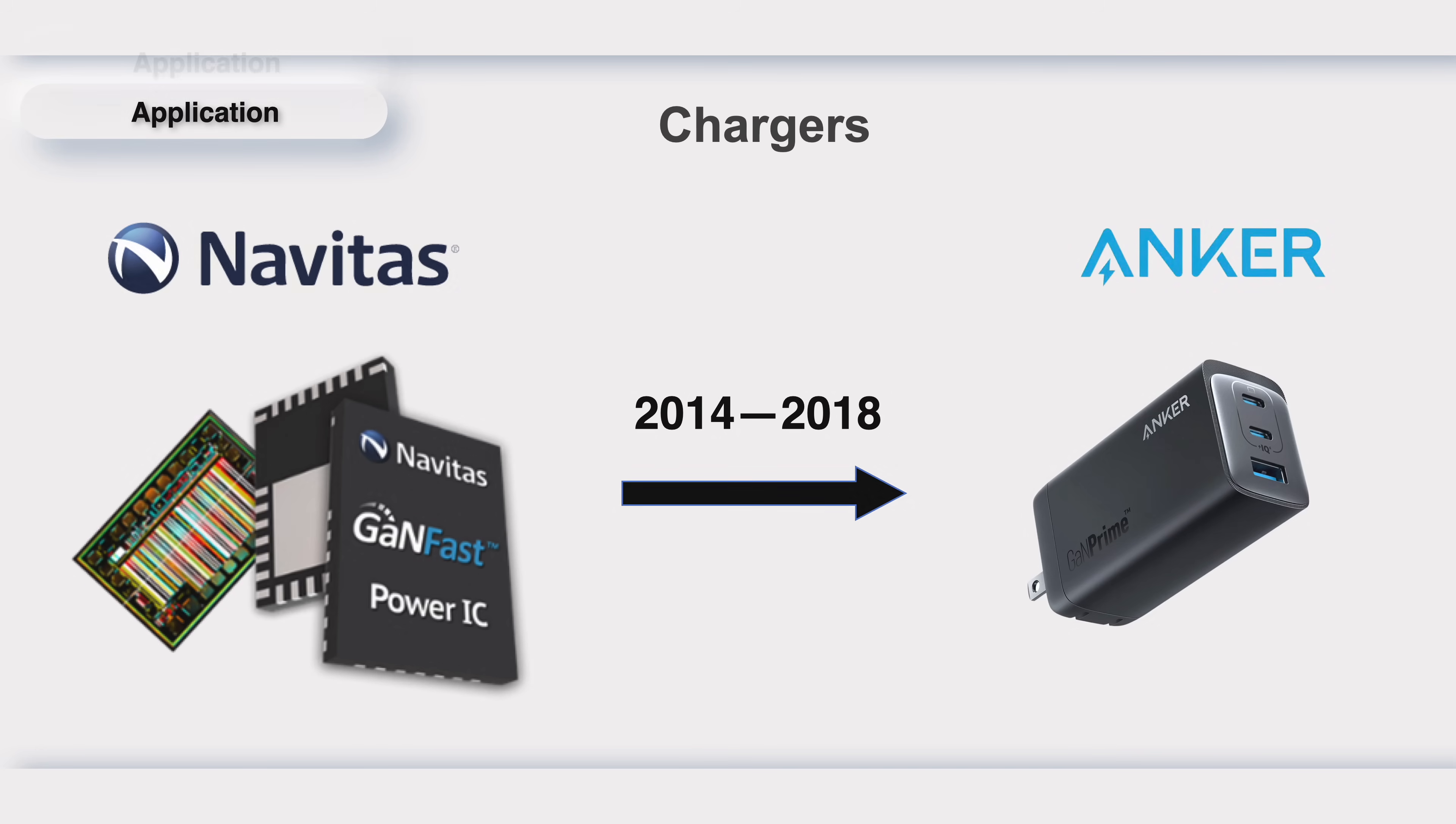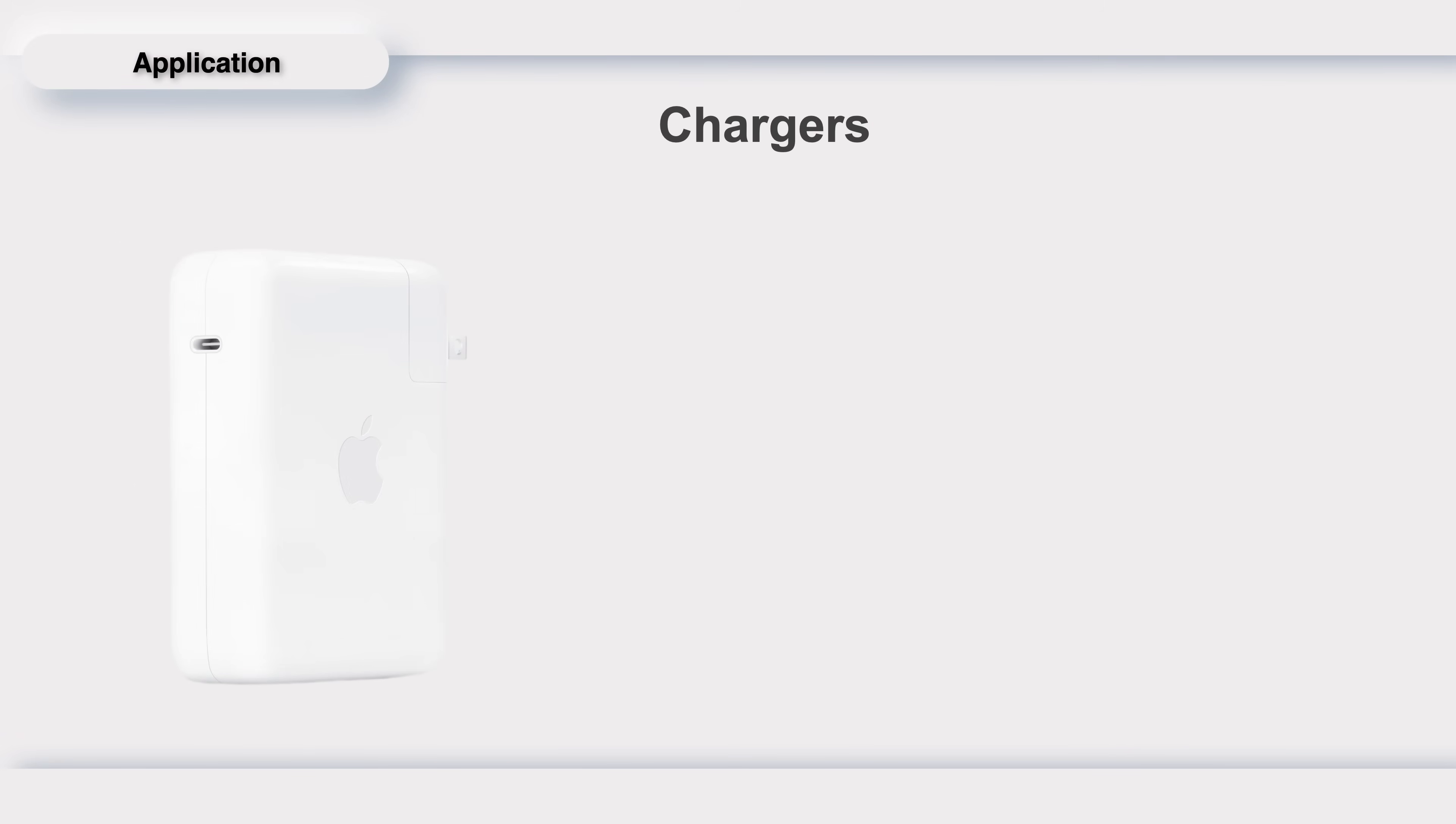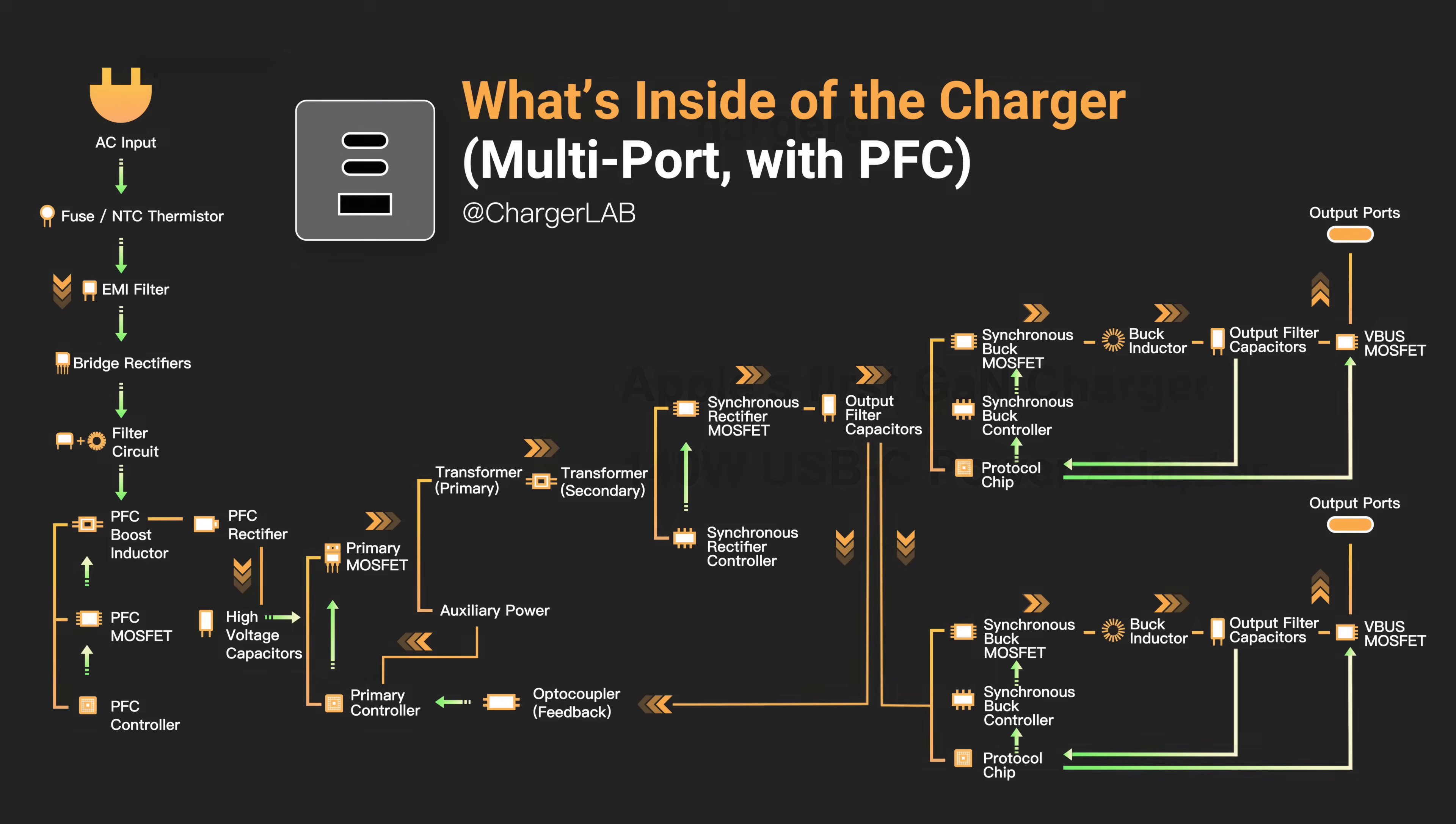it was first adopted by Anker in their chargers. Then, more and more manufacturers began to do so, and even Apple launched its first 140W GAN charger. So how does GAN allow chargers to significantly reduce size and increase upper power?